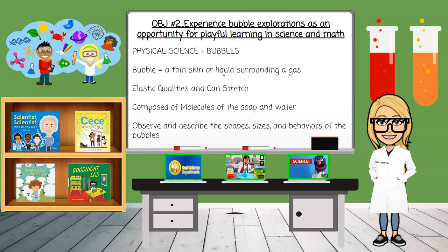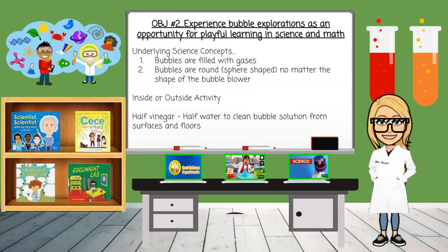Through the exemplar activity, children experiment to learn what kinds of bubbles can be made using everyday objects. They observe and describe the shapes, sizes, and behaviors of the bubbles. As children become successful bubble blowers, they predict, compare, ask questions, communicate, and learn about cause and effect. The underlying science concepts are: number one, bubbles are filled with gases, and number two, bubbles are round and sphere-shaped — no matter the shape of the bubble blower, they are always round and sphere-shaped. However, when bubbles are touching each other or a surface, they do have a flat edge. This activity can be done outside on a day with good weather, with advantages of easier cleanup and more space.